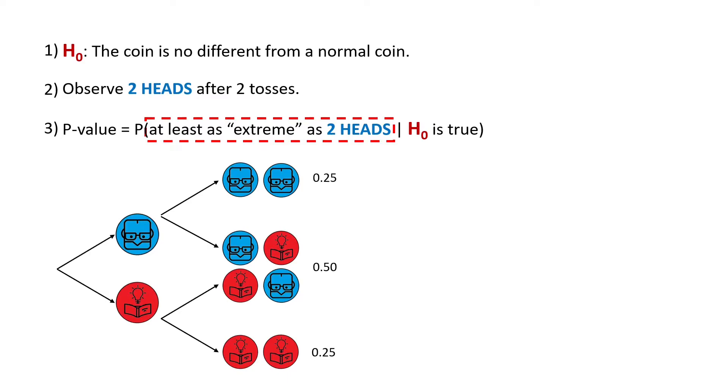And we toss it again and get the following outcomes with the following probabilities. So we get a 25% chance to obtain two heads, 25% chance to obtain two tails and 50% chance to obtain a tails and a heads. And the cases that are at least as extreme as two heads are two cases whose probability are less or equal than the probability of obtaining two heads. So the cases are two heads and two tails, each having a probability of 25%. So our p-value would be equal to 0.25 plus 0.25, which is equal to 0.5.